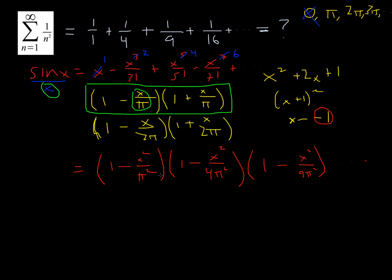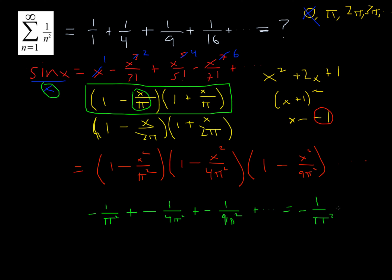This is an infinite number of factors, and if we took the time to foil all of these out, the x squared term in the whole product would be negative 1 over pi squared plus negative 1 over 4 pi squared plus negative 1 over 9 pi squared, and on and on — an infinite number of terms. This is basically equal to negative 1 over pi squared times our original problem, which equals the infinite sum of 1 over n squared starting with n equals 1.